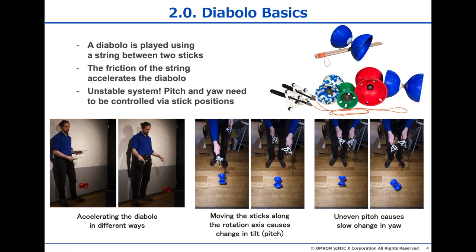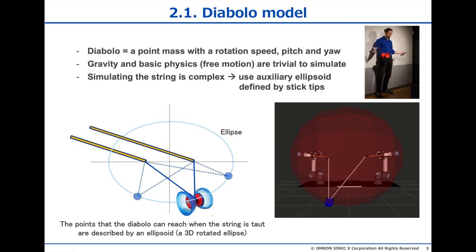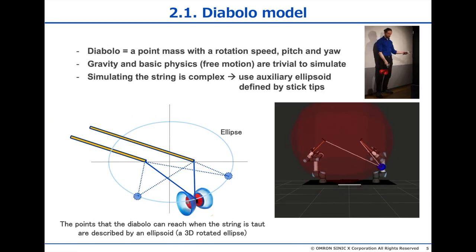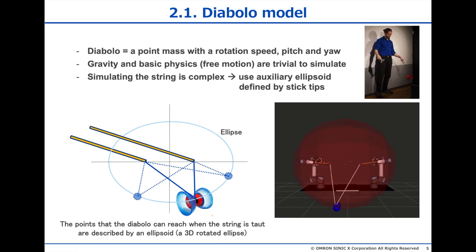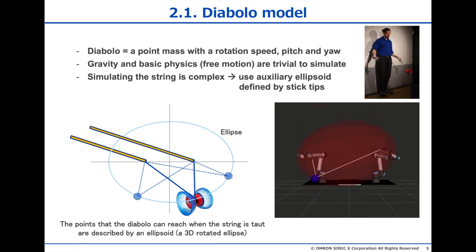Now, how did we model this? We make two big simplifying choices. First, we represent the Diabolo as a point mass with internal parameters. Second, because simulating the string and Diabolo is complicated, we represent the string as an ellipsoid, which is just an ellipse in 3D.